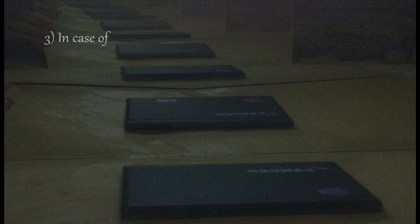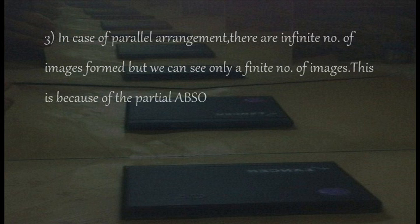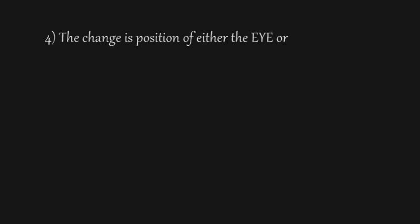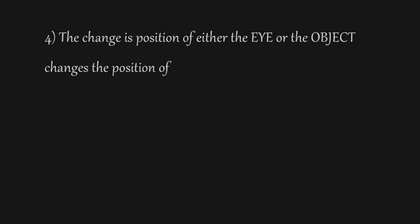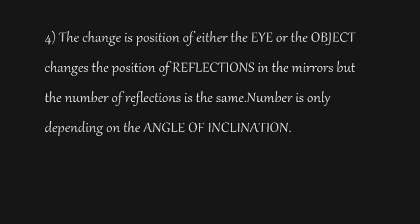Number three: in the case of a parallel arrangement, infinite images are formed, but we can see only a finite number due to partial absorption of light after every reflection. Number four: changing the position of either the eye or the object changes the position of reflections in the mirrors, but the number of reflections remains the same — it depends only on the angle of inclination.